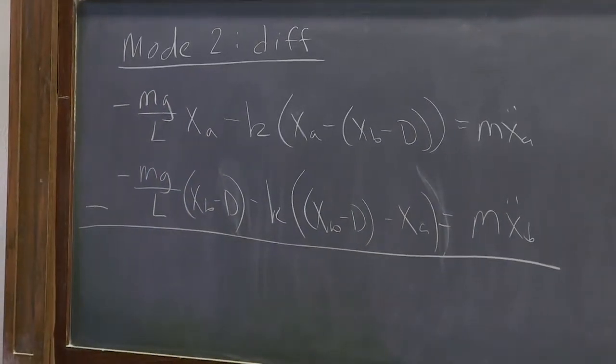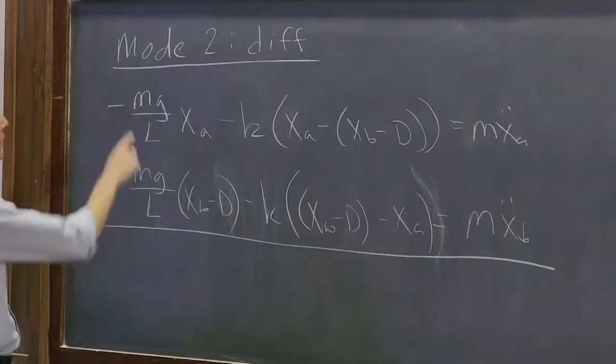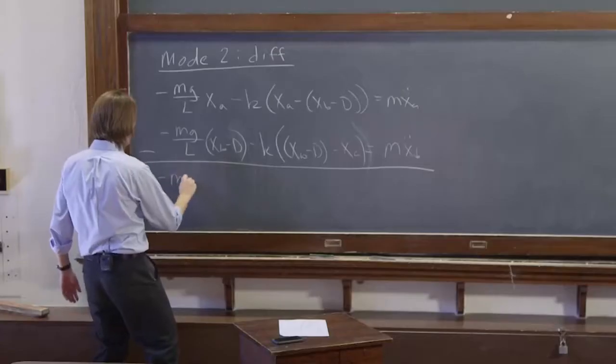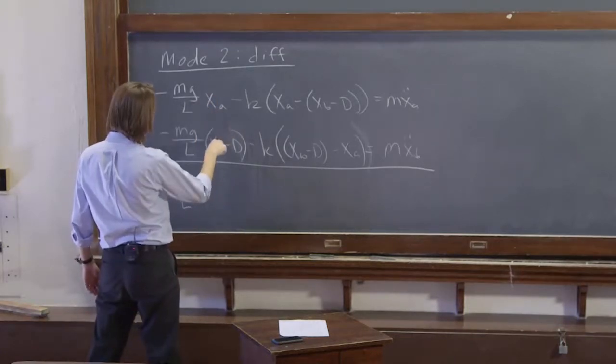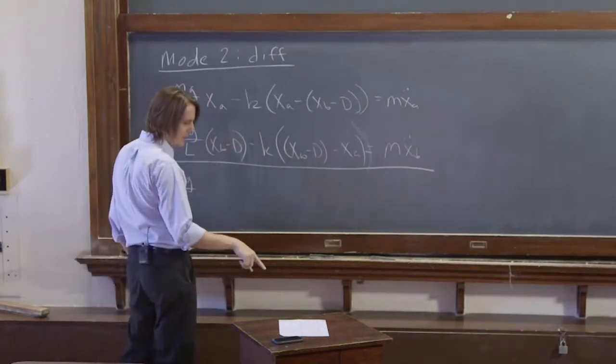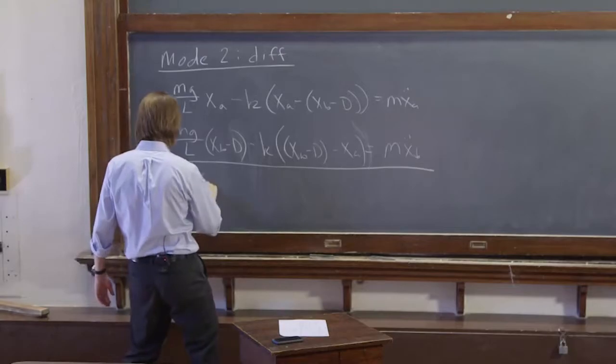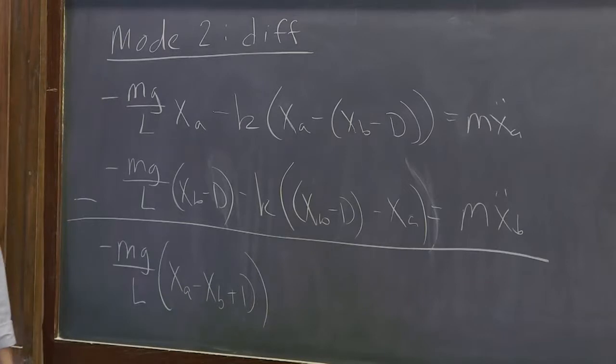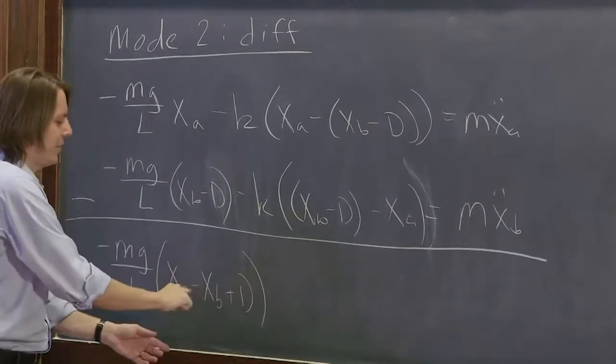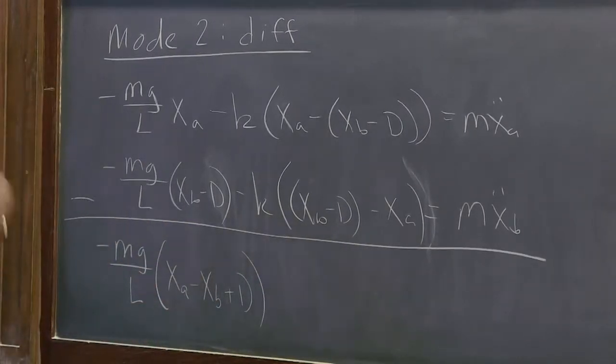So there we go and we end up with minus mg over L times (xA minus xB minus D). I'll write that as xA minus xB and I'll just go and write plus D just to keep it simple. We're not distributing that negative sign, it's just minus xB which makes the D plus.